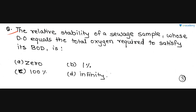The next MCQ that can be asked on relative stability is: 'The relative stability of a sewage sample whose DO equals the total oxygen required to satisfy its BOD is?' For this, you need to know the definition: relative stability is the ratio of oxygen available in the effluent to total oxygen required to satisfy first stage BOD demand. If both values are equal, the relative stability is obviously 100%.